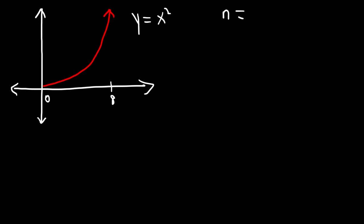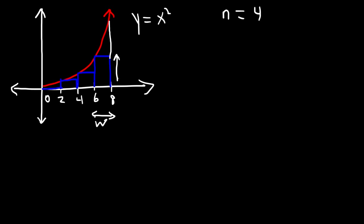We're going to use four rectangles, so n equals 4, and we'll break this up into four sub-intervals. Using the left endpoints, the first rectangle is at 0 so it has no height. The second rectangle when x is 2 touches the curve, the next when x is 4 touches the curve, and when x is 6 as well. You can see this is going to be an under-approximation — less than the actual area. To calculate the area of each rectangle, we multiply the width by the height.